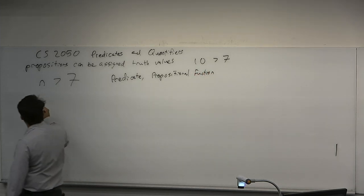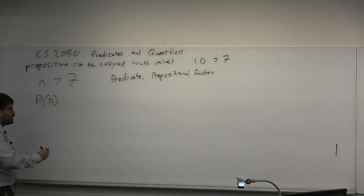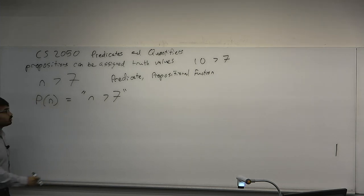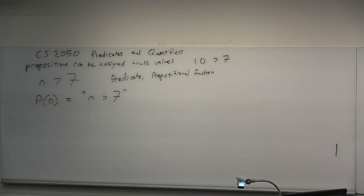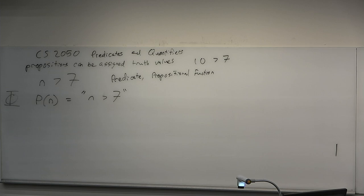A predicate or propositional function takes on some number of variables and is defined to output true or false. The truth of the predicate can only be determined after you've filled in all the variables. Once the predicate has no more free variables, then it can be assigned a truth value. We usually use a capital letter — sometimes a Greek capital letter like capital Phi — for a predicate, in contrast to a lowercase letter which is a proposition or propositional variable.